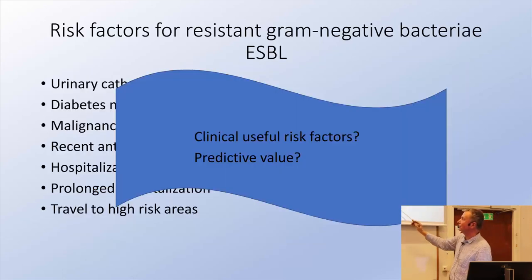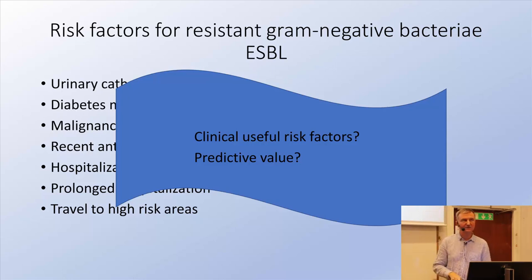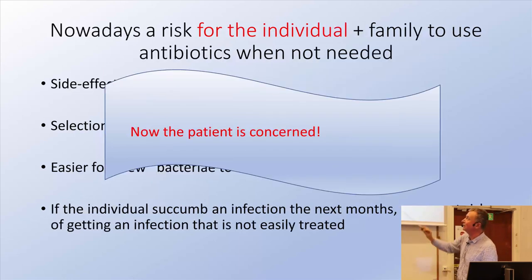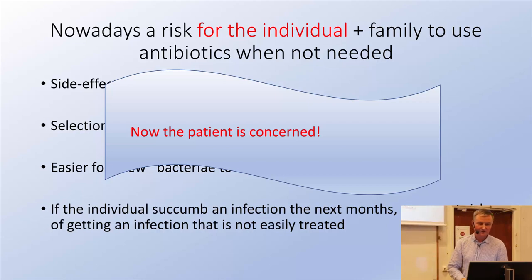We want to use clinically useful risk factors so we know before the resistance results — within three days — which patients have a resistant infection. The patient always thinks this will not happen to them, that they will not have a resistant infection. But now, with information about the individual risk of antibiotic treatment, the patient becomes concerned.